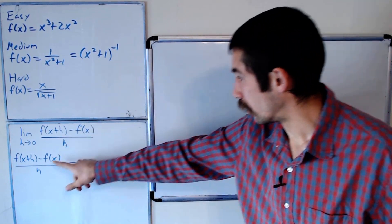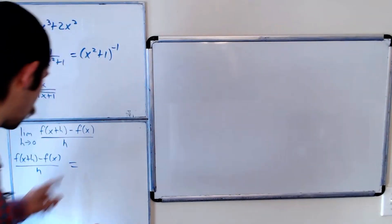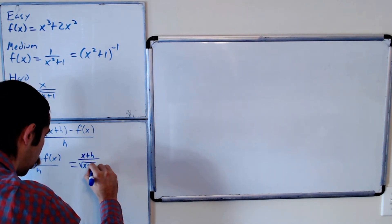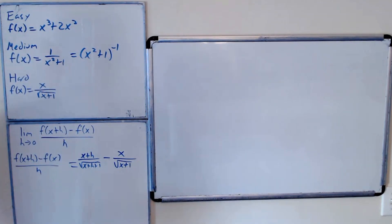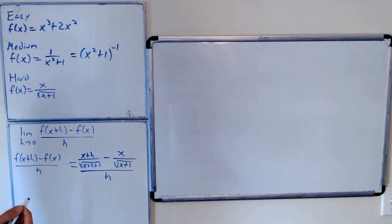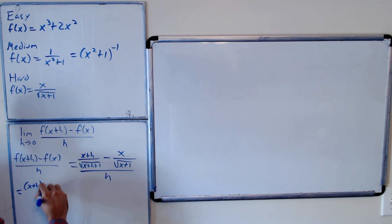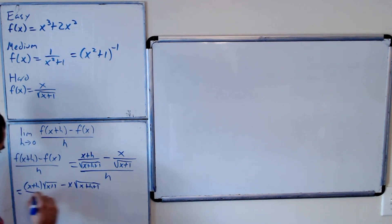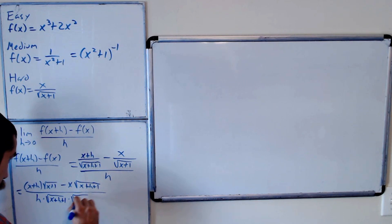Now we're on to the hard one. Let's simplify this difference quotient and then evaluate the limit as h goes to zero. Replacing every x with x+h, the difference quotient is [(x+h)/√(x+h+1) − x/√(x+1)] all over h. We have fractions with square roots, so let's get a common denominator. That gives us [(x+h)√(x+1) − x√(x+h+1)] all over h√(x+h+1)√(x+1).